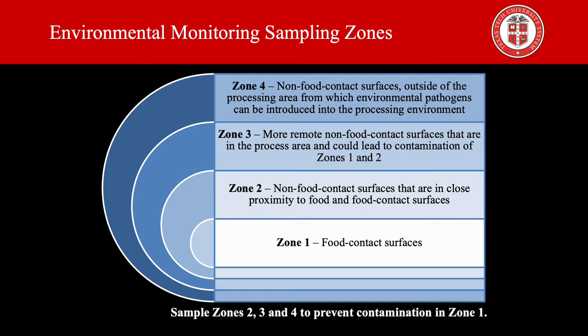Zone 3 covers more remote non-food contact surfaces that are in the process area and could lead to contamination of zone 1 and zone 2. For example, floors, walls, ceilings, houses, air handling units, drains, foot mats and baths, forklifts, rooms, mops, and pallets.